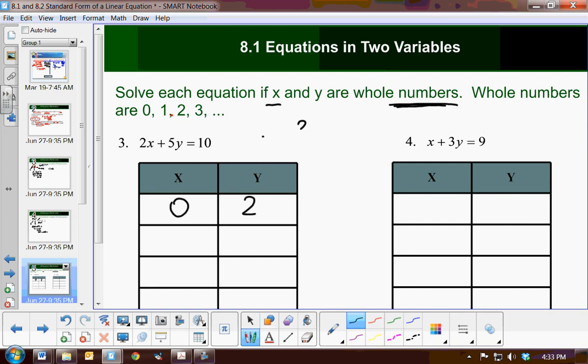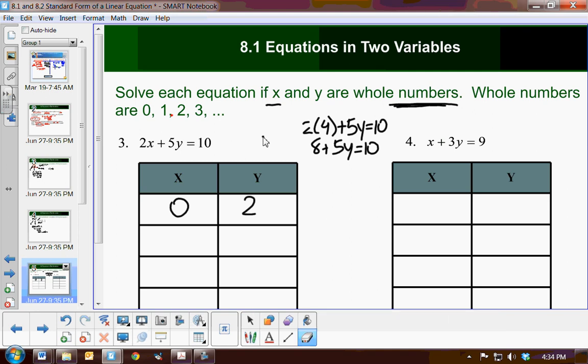How much farther must I go? 2 times 3 plus 5y equals 10. Well, I get 6. Well, I can see right away again I am not going to get a whole number for y. Because when I subtract 6, I get 4. 2 times 4. Are you getting tired of this yet? So I get 8 plus 5y equals 10. Well, I subtract 8 and I get 2. That is not a solution either.